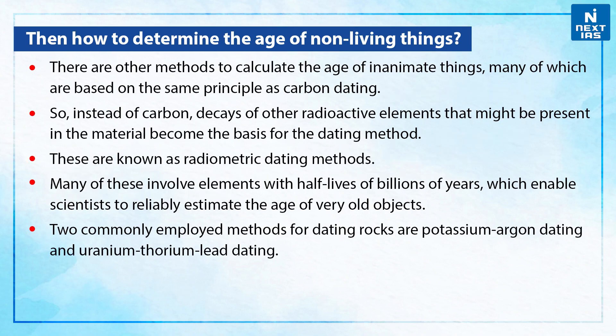Then the question is, how do we determine the age of non-living things? There are other methods to calculate the age of inanimate things, many of which are based on the same principle as carbon dating. Instead of carbon, decays of other radioactive metals that might be present in the material become the basis for the dating method. These are known as radiometric dating methods, and many involve elements with half-lives of billions of years, which enable scientists to reliably estimate the age of very old objects.